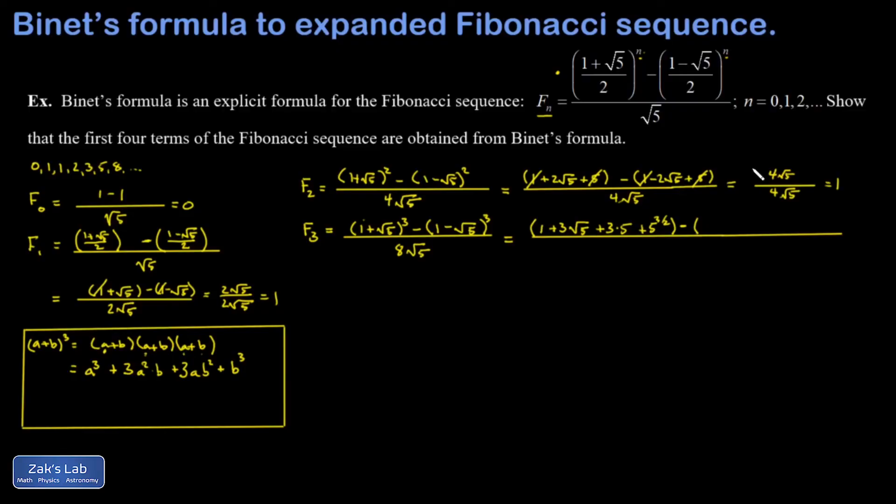Then I get into cubing my second binomial and here a is one and b is negative root five. So I have one, then in my a squared term that would give me three times one squared times b, which is negative root five. So this is going to be negative three root five. And then I go to my a b squared term. So I have plus three times one times negative root five squared, which is just positive five.